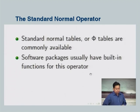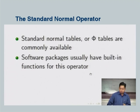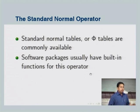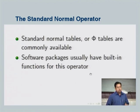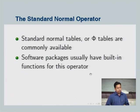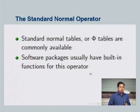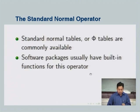You have standard normal tables in any textbook on probability and statistics, such as Ross. Those tables give you values of the CDF for standard normal variable z — for different values of z you get the value of the CDF. Software packages also have built-in functions to determine the value of the standard normal CDF at a given z.